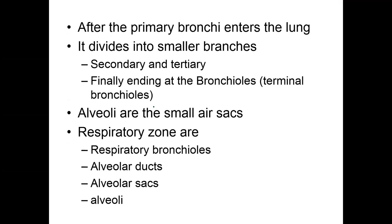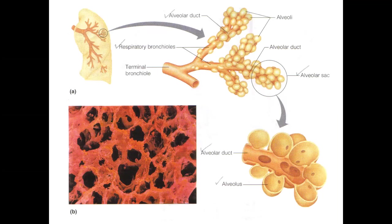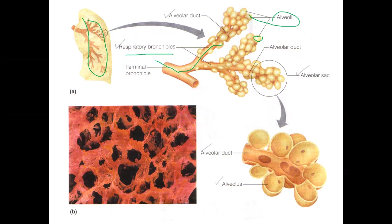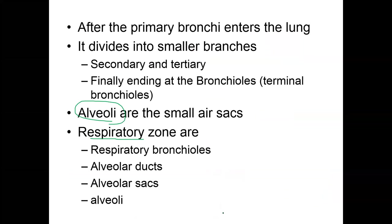Different respiratory zones exist once you get into the alveoli area. The more distal aspect of the lung contains the terminal bronchiole, which eventually has clusters of grape-like structures called alveoli. You then have the respiratory bronchiole, the alveolar duct, the alveolar sac, and the alveolus — those are the respiratory zones.